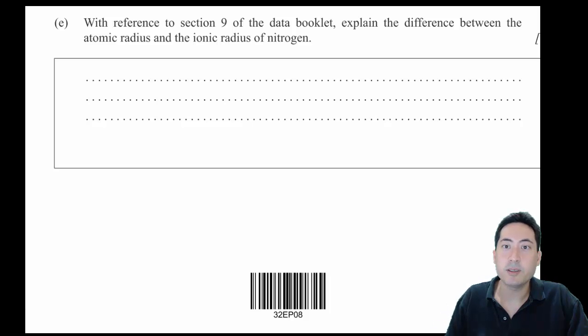With reference to section 9 of the data booklet, explain the difference between the atomic radius and ionic radius of nitrogen. Now when they say this, if you don't reference and specifically talk about that, then you won't get the mark.